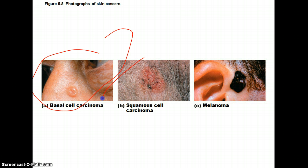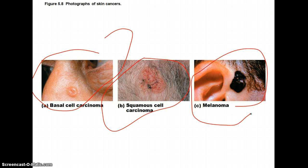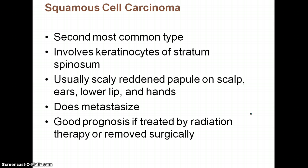Squamous cell carcinoma is the second most common type. It involves the keratinocytes of the stratum spinosum. You'll usually see a scaly, reddened papule on the scalp, ears, lower lip, or hands. This type can metastasize and spread to other areas, but if found quickly, it can be treated with radiation or surgical removal with a pretty good cure rate.